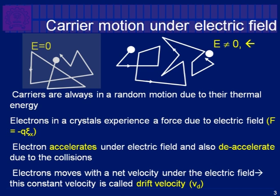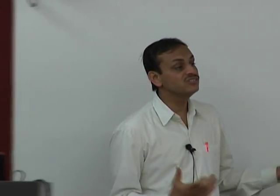In any semiconductor, if you are not applying any electric field, the electron is still moving all the time due to thermal energy — even at room temperature it has enough energy to move around. But the net motion is zero, which means current is zero. No charge transfer per unit time, so dQ/dt = 0 and therefore current is zero. Without an electric field, the net current is zero.